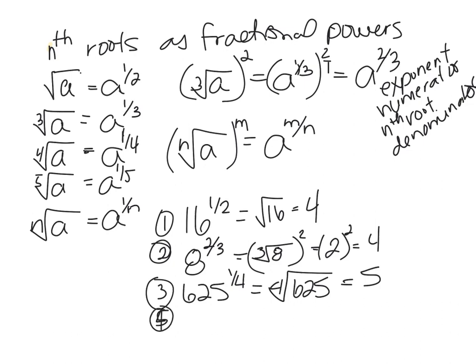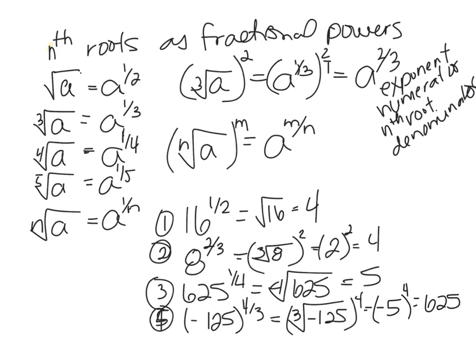We have example 4: negative 125 to the 4/3 power. That's the same as the cube root of negative 125 to the 4th power. The cube root of negative 125 is negative 5. And negative 5 to the 4th power - negatives to an even power, positive - and 5 to the 4th power is 625, so positive 625.